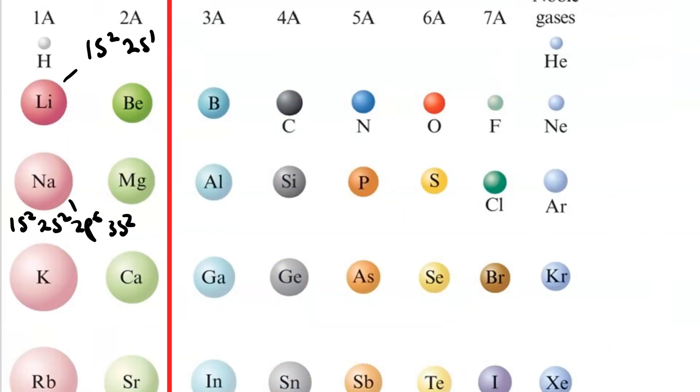Now, consider the difference between lithium and sodium. Sodium, here, clearly has a larger atomic radius than lithium. Sodium and its electron configuration has 11 electrons instead of 3, so 8 more. It makes sense that it would be bigger since it has more electrons.